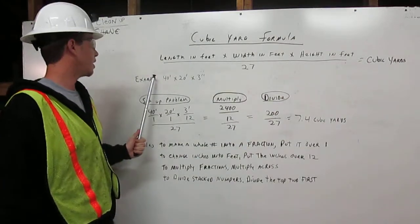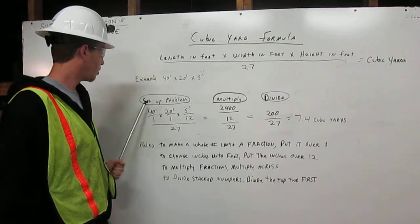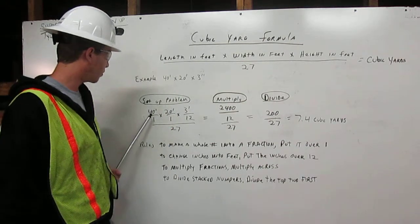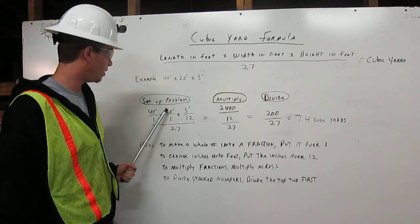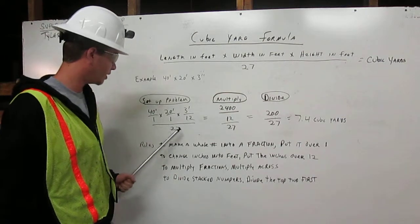Our example is going to be a slab that's 40 feet by 20 feet by 3 inches. To set up the problem, we'll put 40 feet over 1 times 20 feet over 1 times 3 feet over 12, over 27.